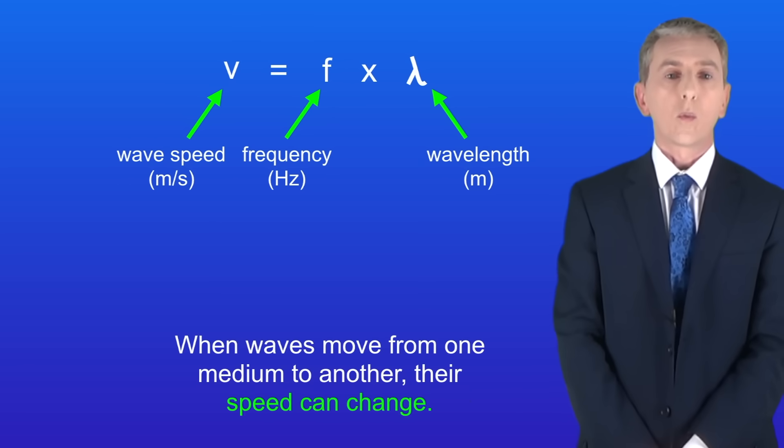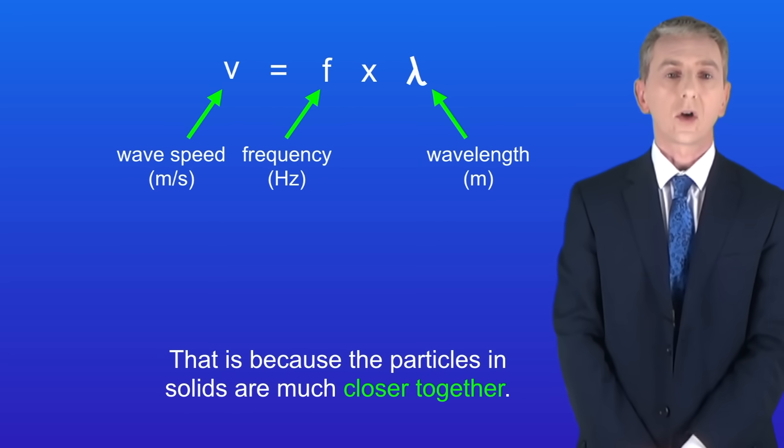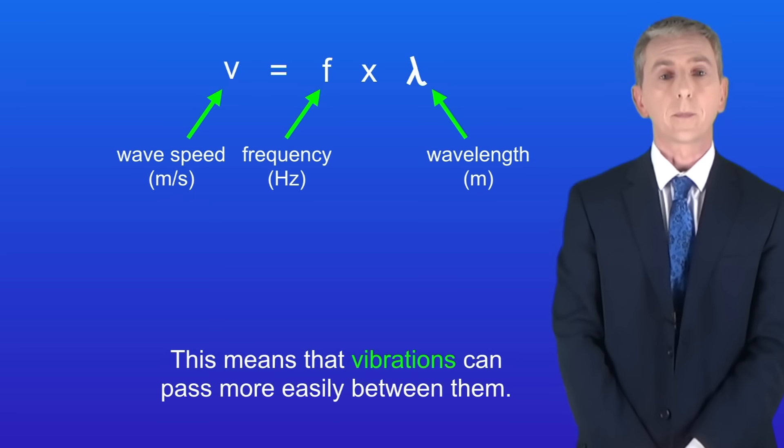Now when waves move from one medium to another their speed can change. For example sound waves travel much faster in solids than in gases. That's because the particles in solids are much closer together. This means that vibrations can pass more easily between them.